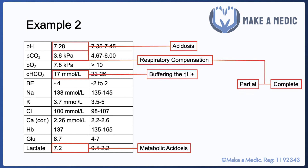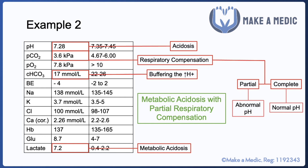Finally, we can see a clear cause of the metabolic acidosis — the lactate is elevated. When it comes to compensation, we can describe it as either partial or complete. Partial compensation means the pH is still abnormal — the lungs are trying their best but not fully normalising it. Complete compensation is when the lungs increase their ventilatory rate enough to normalise the pH despite the presence of excess metabolic acids. This example represents metabolic acidosis with partial respiratory compensation.